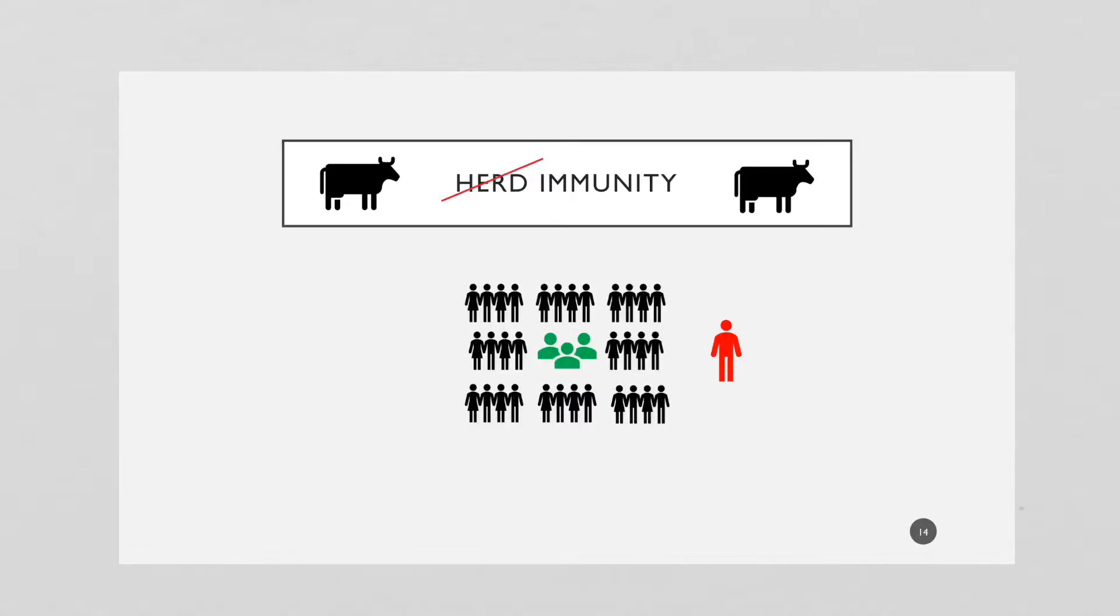Now suppose somebody coming into this population has the disease. The question is, are these people going to be protected because of all these other people around them who are immune? The answer is yes - we have this significant level of people who are vaccinated or immune because they contracted the disease, and they're going to protect the ones in the middle or among them.